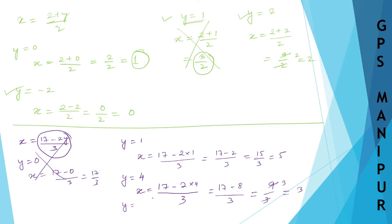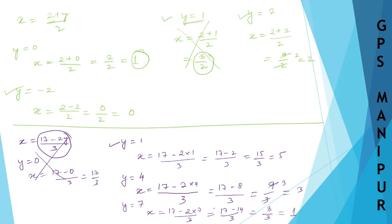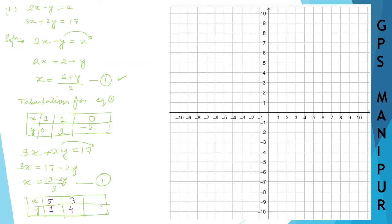Let us try y is equal to 7. x will be 17 minus 2 into 7 divided by 3, which is 17 minus 14 divided by 3, giving 3 divided by 3, so x is 1. Summarizing: when y is 1, x is 5; when y is 4, x is 3; when y is 7, x is 1.